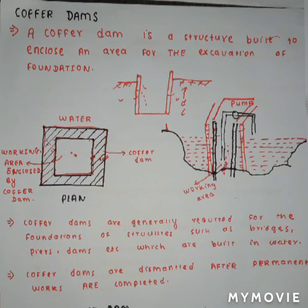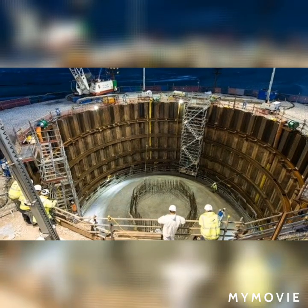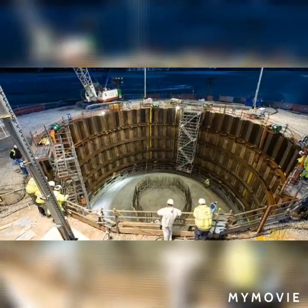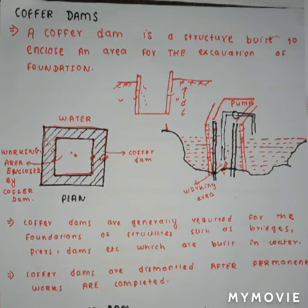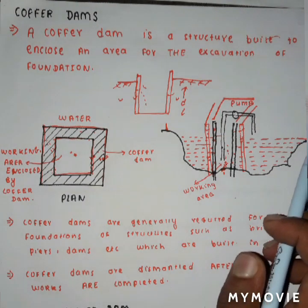Welcome to this video about cofferdams and their types. While constructing a bridge on a large water body, we have to construct piers on the water body to support the bridge. For the construction of piers, we have to do concreting work, and concreting on water is only possible with the help of special types of dams known as cofferdams. Suppose we have to construct a bridge in this water body.